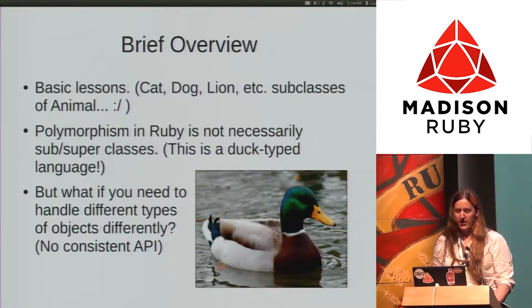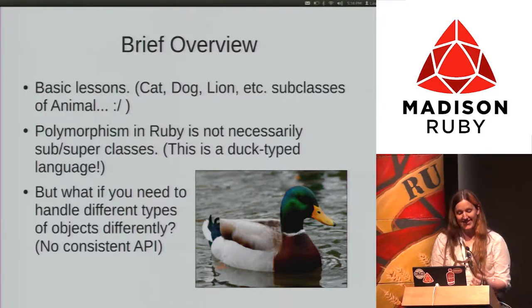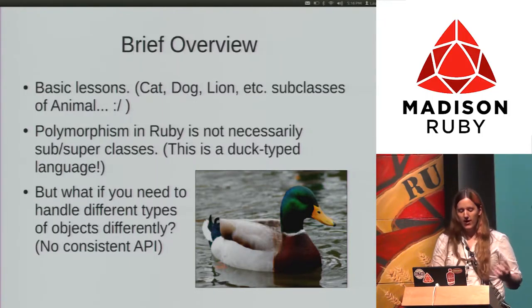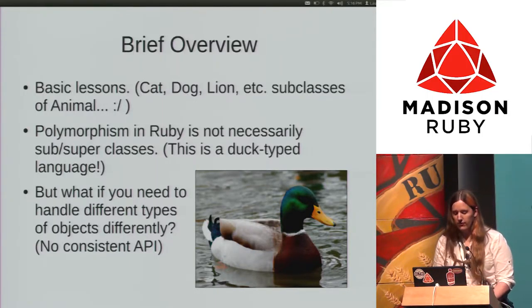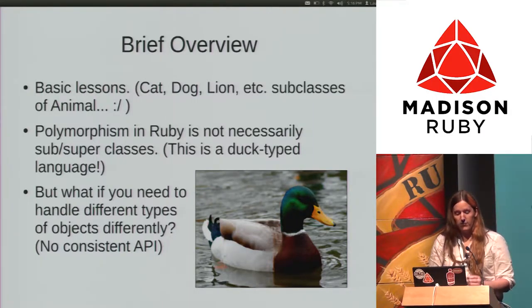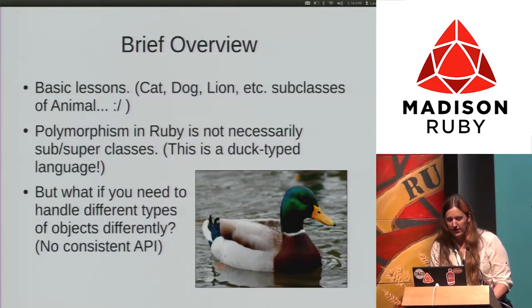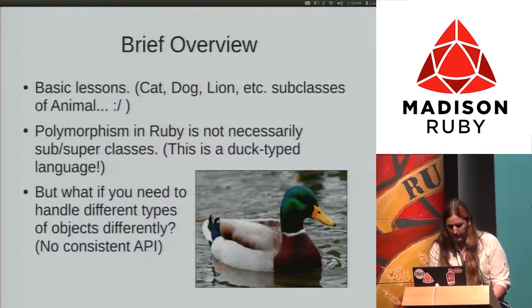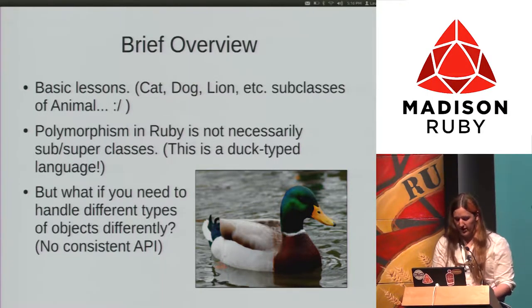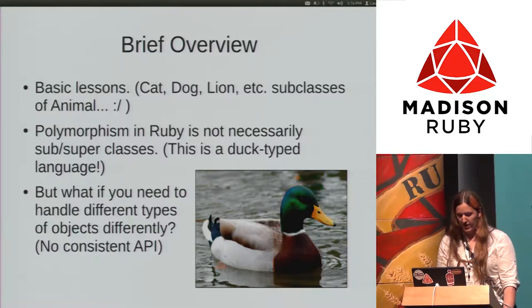Polymorphism in Ruby is not just that. It's a duck-typed language, so that means you can actually work around just objects — you can have things that simply act like objects. What if you needed to handle different types of objects differently and you have no consistent API?